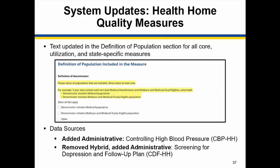For health home quality measures reports in 2019, the text was updated below the Definition of Population section for all core utilization and state-specific measures. Data sources were also added and removed on the core set measures listed on the slide.